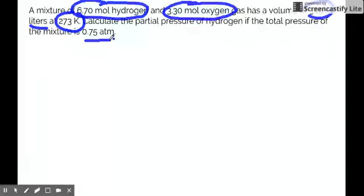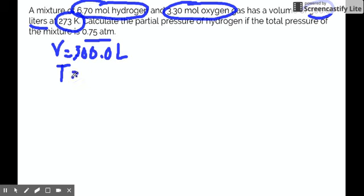Now, I said when you put the given, you have to separate the one for the mixture and the one for the individual component amount. So for the mixture alone, we know that you have a total volume of 300 liters, and then you also have temperature of 273 Kelvin, and of course you have a total pressure of 0.75 atmosphere.